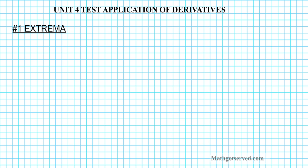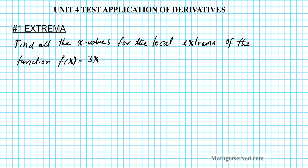Good day students. Welcome to mathgotserved.com. In this clip, we're going to be going over an example on how to find the local extrema of a function. Let's take a look at question number one. We're to find all the x values for the local extrema of the function f of x equals 3x to the third minus 5x square, and then we're to state if it is a max or min.